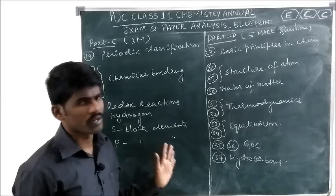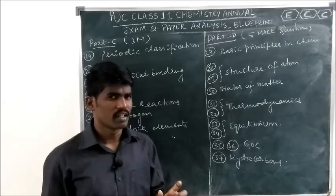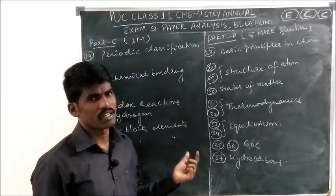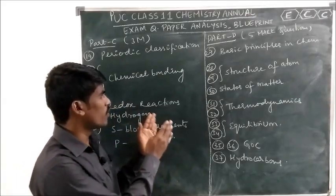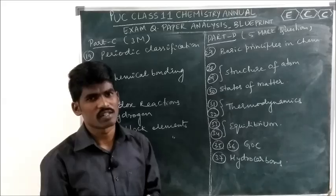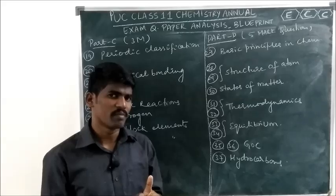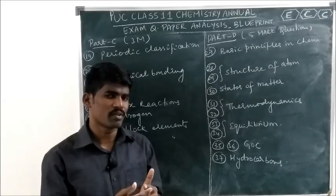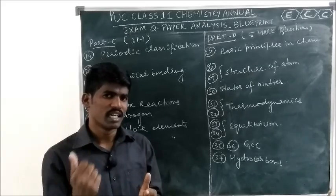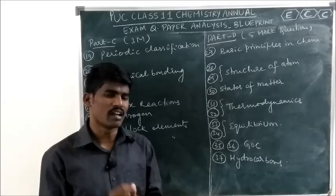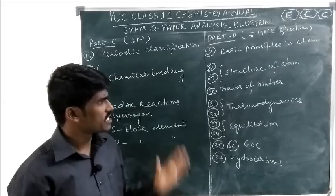If you follow this pattern properly, you will get 70 out of 70 marks with no doubt. Those who are trying to pass in the PUC board examinations should focus more on 5-mark and 3-mark questions. Follow the first seven chapters of the PUC NCERT textbook plus General Organic Chemistry and Hydrocarbons — these nine chapters — and you will get around 50 marks.